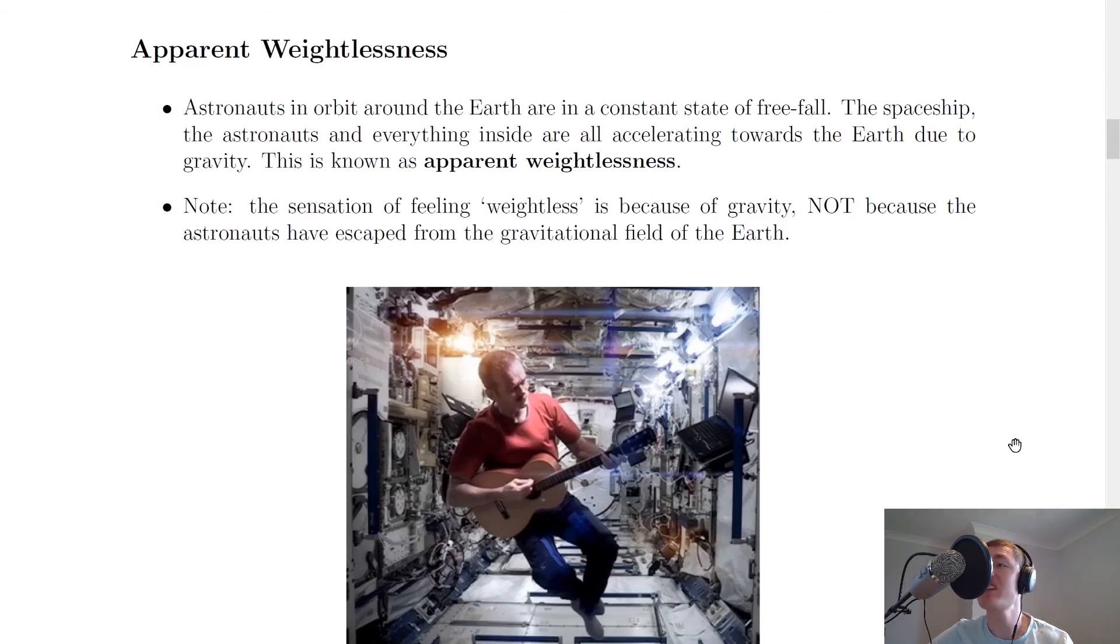The last thing to look at now is called apparent weightlessness. This is the idea of an astronaut floating in a spaceship which you've probably been aware of before but maybe just haven't given this name before. Astronauts in orbit around the Earth are in a constant state of freefall. The spaceship, the astronauts and everything inside are all accelerating towards the Earth due to gravity. This is known as apparent weightlessness.